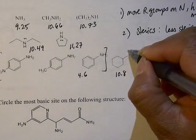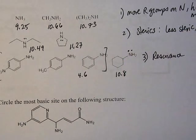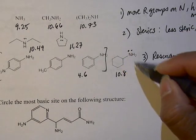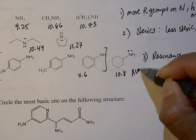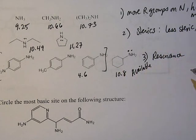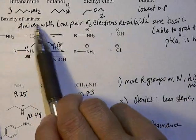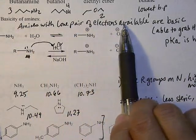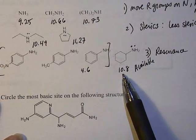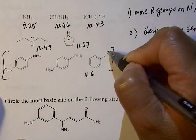So in other words, the lone pair on the nitrogen on the cyclohexylamine is available. It's not sharing with anything. So remember the definition of basic amines is amine with the lone pair of electrons available. To be able to go grab a proton, they're going to be more basic.